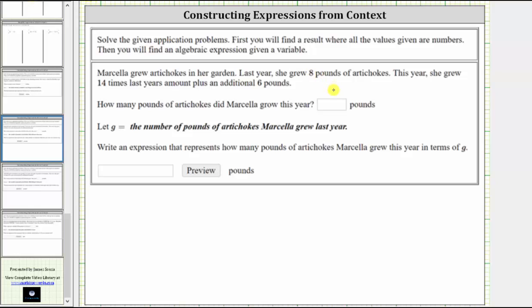Well last year she grew eight pounds of artichokes, and then this year she grew 14 times this amount plus an additional six pounds. To get 14 times this amount, we multiply it by 14. And then because she grew an additional six pounds, we now add six to this amount. The value of this expression will tell us how many pounds of artichokes Marcella grew this year.